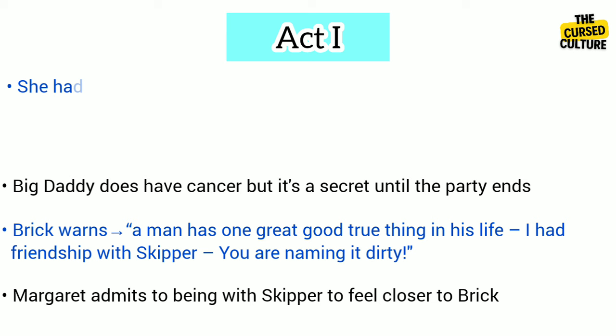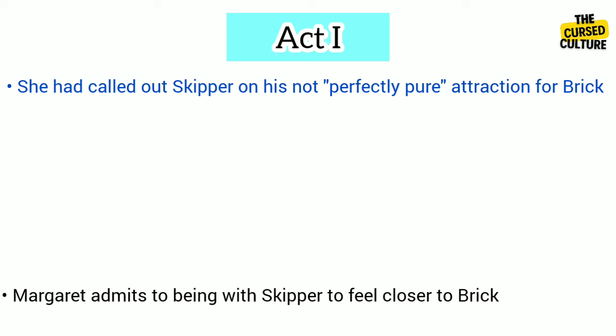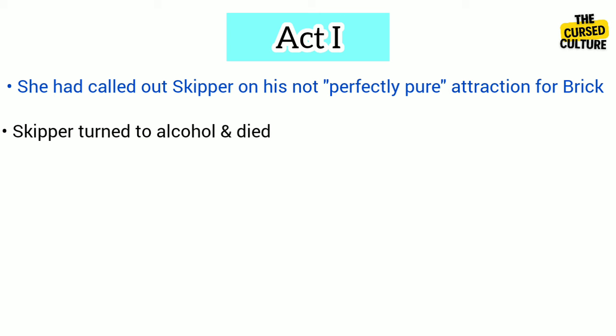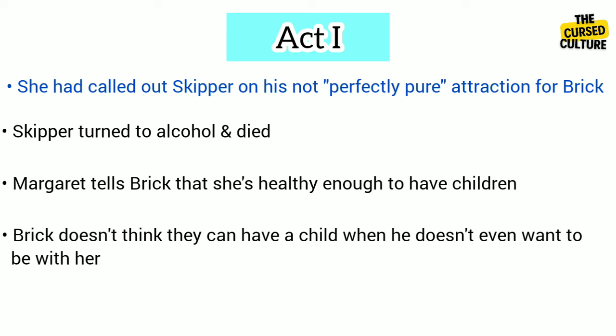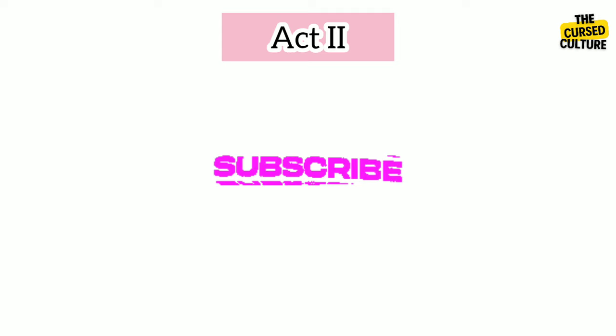She talks about how close Brick and Skipper were and admits to being with Skipper to feel closer to Brick. Margaret had called out Skipper on his intentions, yearning for something that was not perfectly pure — attraction for Brick — and in return Skipper first hit her but then slept with her to prove her wrong. Later he turned to alcohol and died. An angry Brick throws his crutch and Margaret hides behind the bed. Just then, the guests and Reverend Tooker, led by Big Daddy, come into their room.